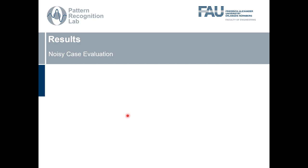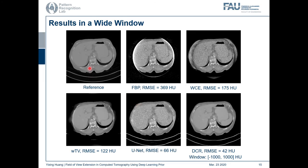Now I want to show some results in the noisy case. This is the reference image, and this is the FBP reconstruction and the WCE reconstruction as we have seen. This is the reconstruction with compressed sensing only — we can see the noise inside the FOV is reduced very well and the anatomical structures can be observed. However, the structures outside the FOV are missing. With deep learning, the U-Net is able to restore the anatomical structures outside the FOV. However, residual noise remains. With our proposed DECA method, both the structures outside and inside the FOV are reconstructed and the residual noise is also reduced. It also achieves the smallest root mean square error for the whole image.